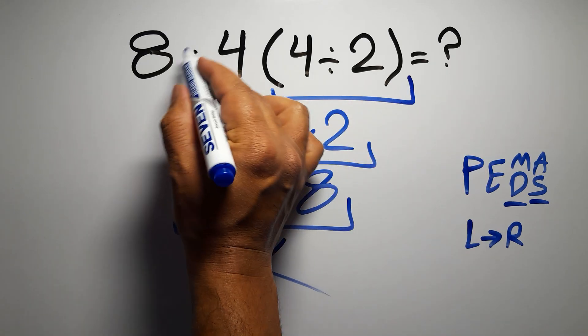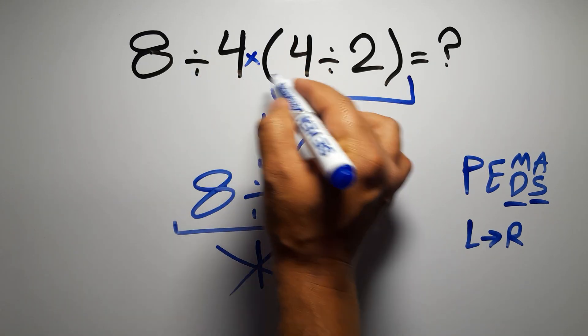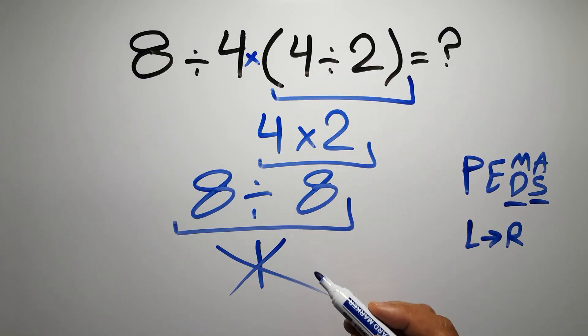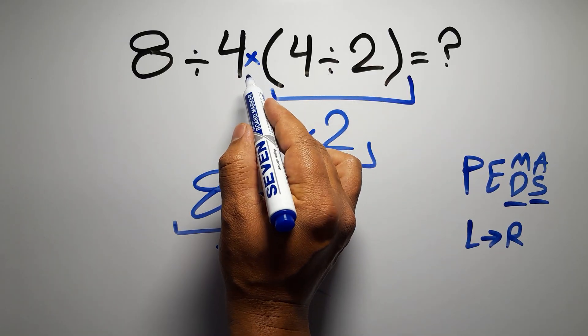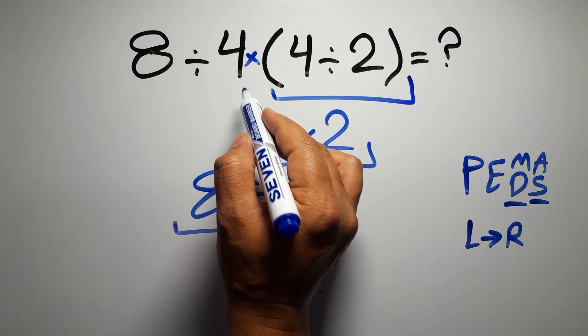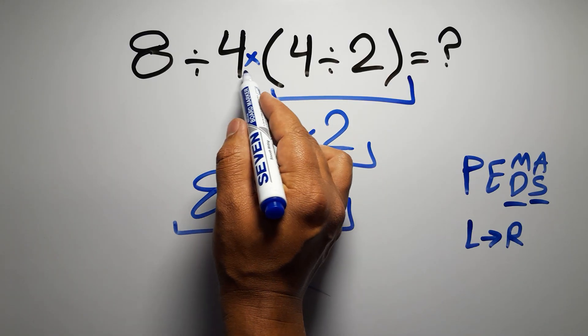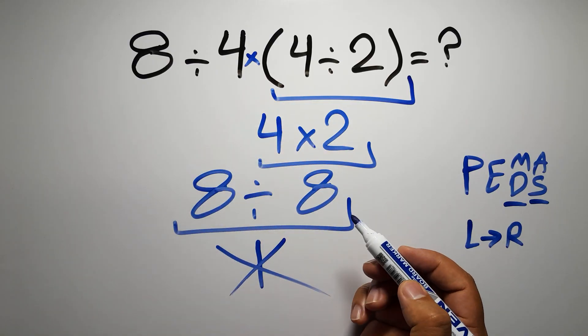In this expression, we have one division, one multiplication, and one parentheses. Inside these parentheses, we have one division. Here we have a multiplication because in mathematics, when a number is placed next to parentheses, it means multiplication, and we usually don't write a multiplication sign for brevity.